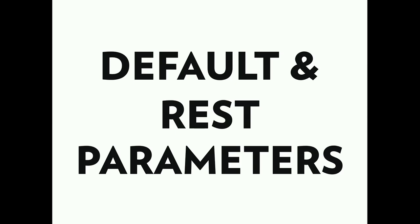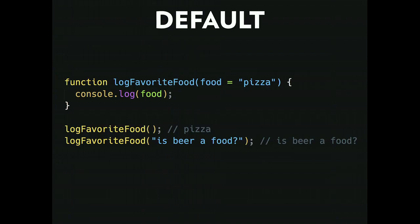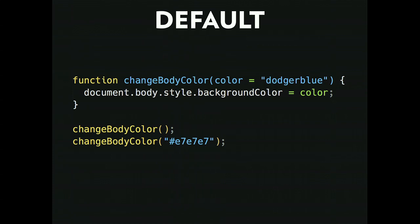Now let's talk about default and rest parameters. Default parameters allow you to write cleaner, readable code. Here's a simple example: a function 'logFavoriteFood' with parameter 'food = pizza'. If I don't pass anything in, the default parameter kicks in — it gives me pizza. If I log with 'beer of food', pizza doesn't show up; the default is overridden. A more real-world example: a 'changeBodyColor' function that applies a background color style. The default parameter is dodger blue. If I don't pass anything in, the body color is dodger blue; if I pass something in like light gray, it uses what I passed.